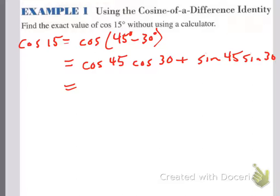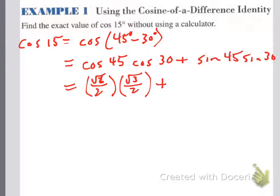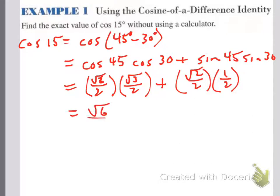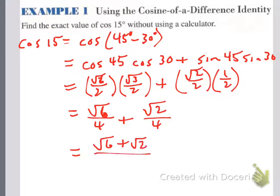45s and 30s and 60s are all part of our special right triangles. Cosine 45 is square root of 2 over 2; cosine 30 is square root of 3 over 2; plus sine 45, square root of 2 over 2; times sine 30, one half. Multiplying the fractions together, I get radical 6 over 4 plus radical 2 over 4. I can't simplify radical 6 plus radical 2, so the answer is just (radical 6 + radical 2) over 4.